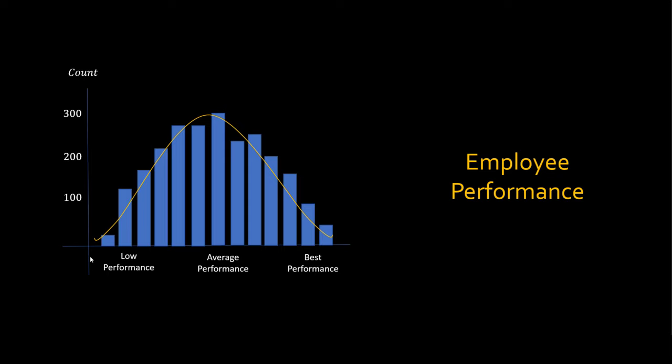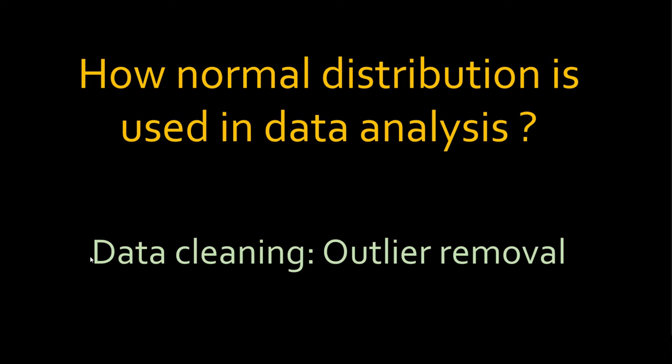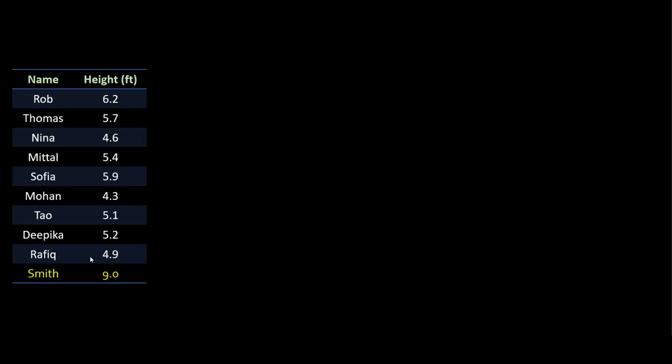You might ask: how can I use normal distribution in real life and data analysis? The classical use case is during the data cleaning process — you can use normal distribution and standard deviation for outlier removal. Let's say I use the same dataset but I've added a new data point, Smith, whose height is 9 feet.